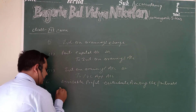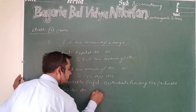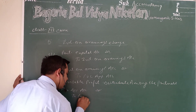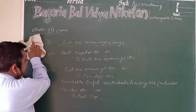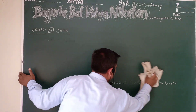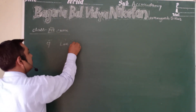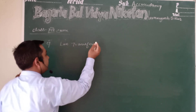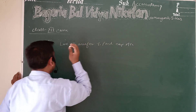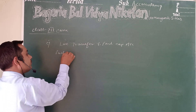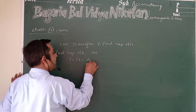When profit is transferred to partners, the entry is: Profit and Loss Appropriation Account debit to Partners' Capital Account. And if a loss is transferred to partners, then the entry is: Partners' Capital Account debit to Profit and Loss Appropriation Account.